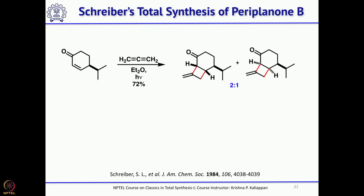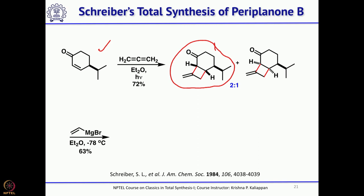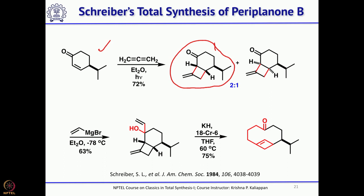There was a 2+2 cycloaddition between cyclohexenone and allene. He got a mixture of 2 isomers in a 2:1 ratio, and the major isomer was the required one. He took that compound and treated it with vinyl magnesium bromide, giving the allylic alcohol. This upon treatment with potassium hydride and 18-crown-6 underwent anionic oxy-Cope rearrangement, giving the 10-membered ring.